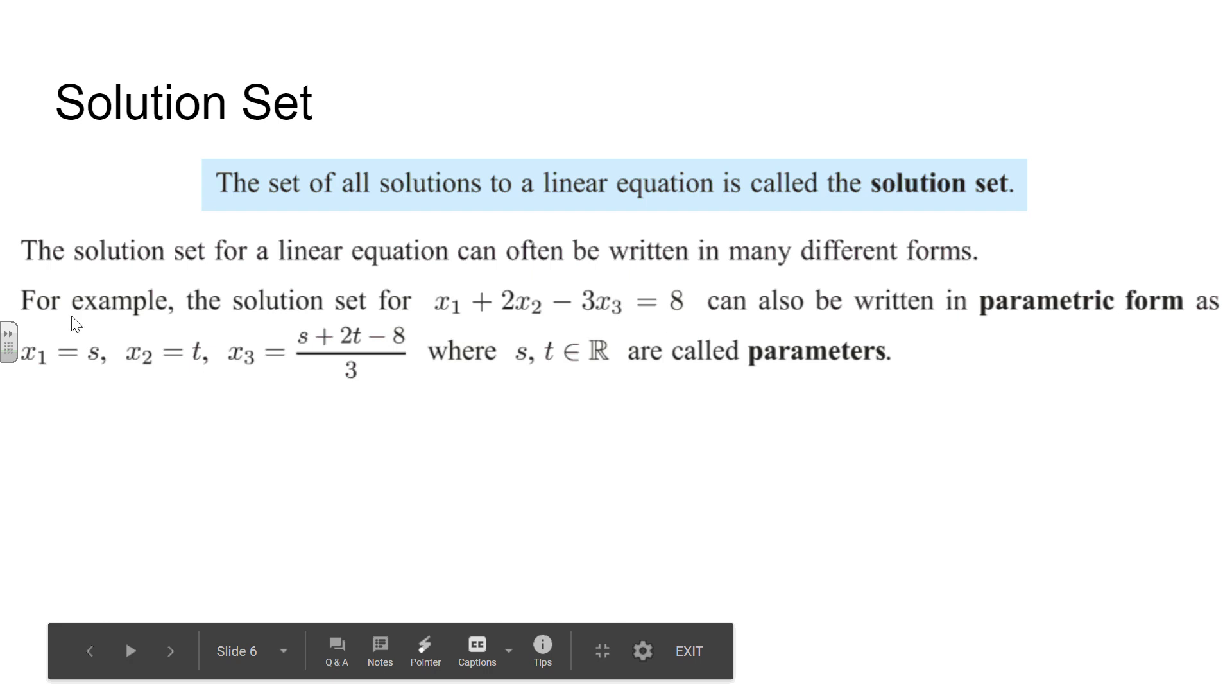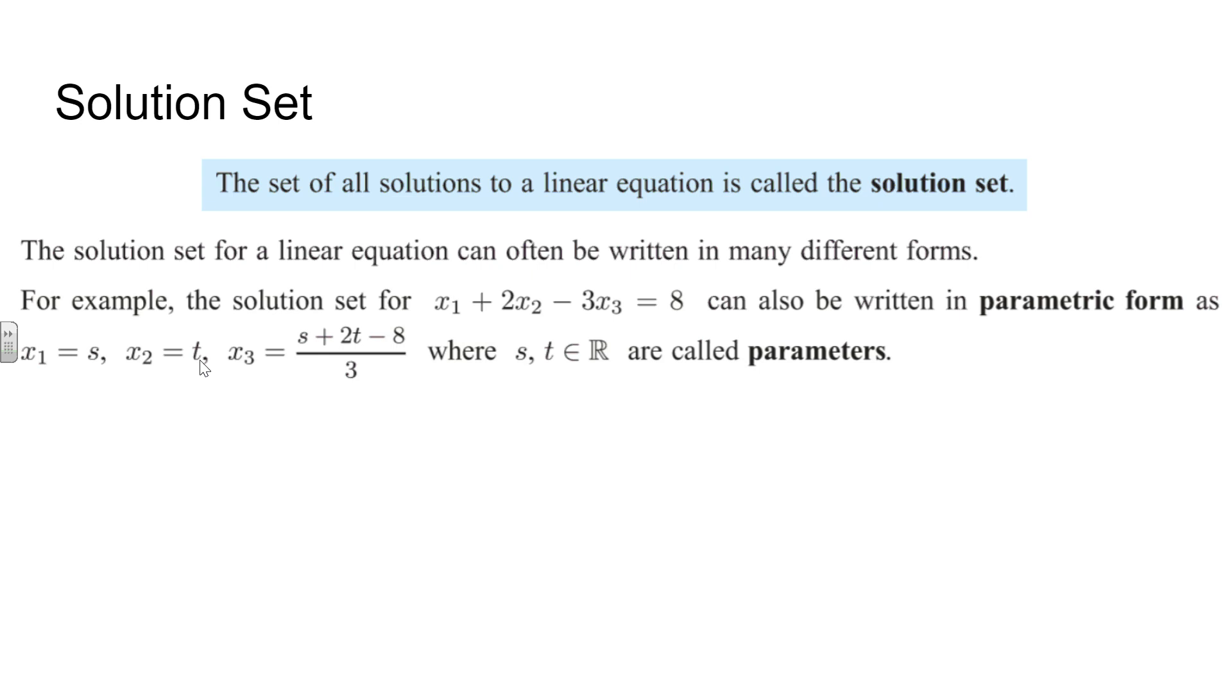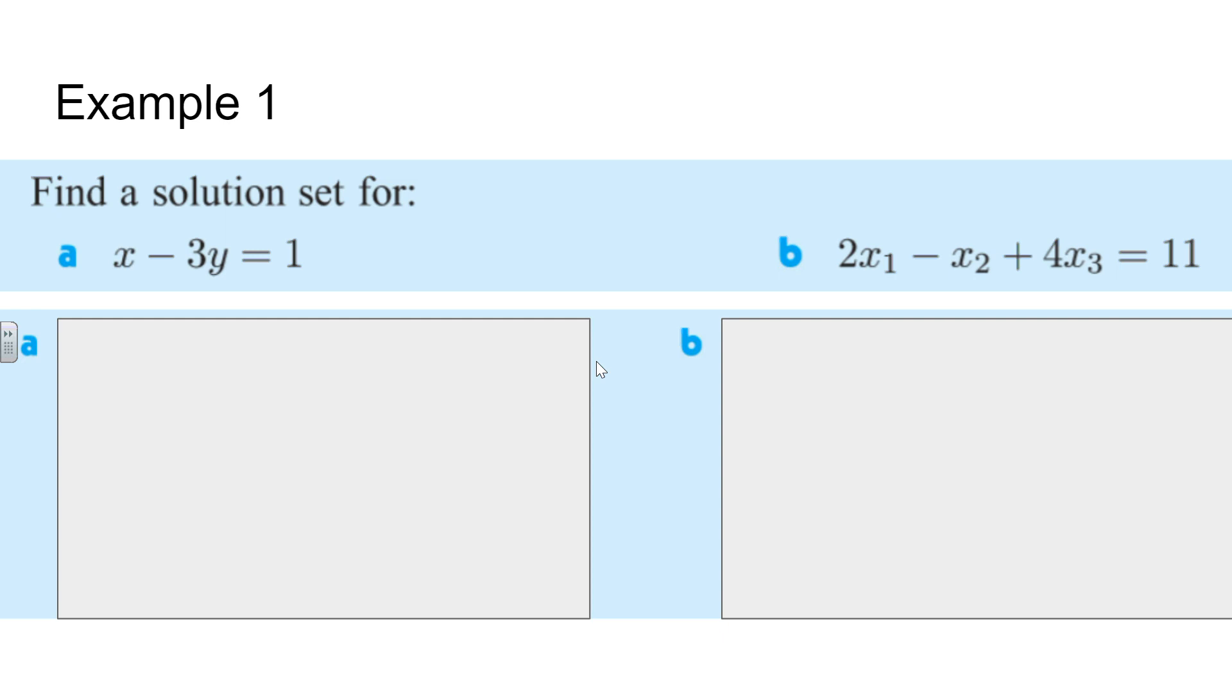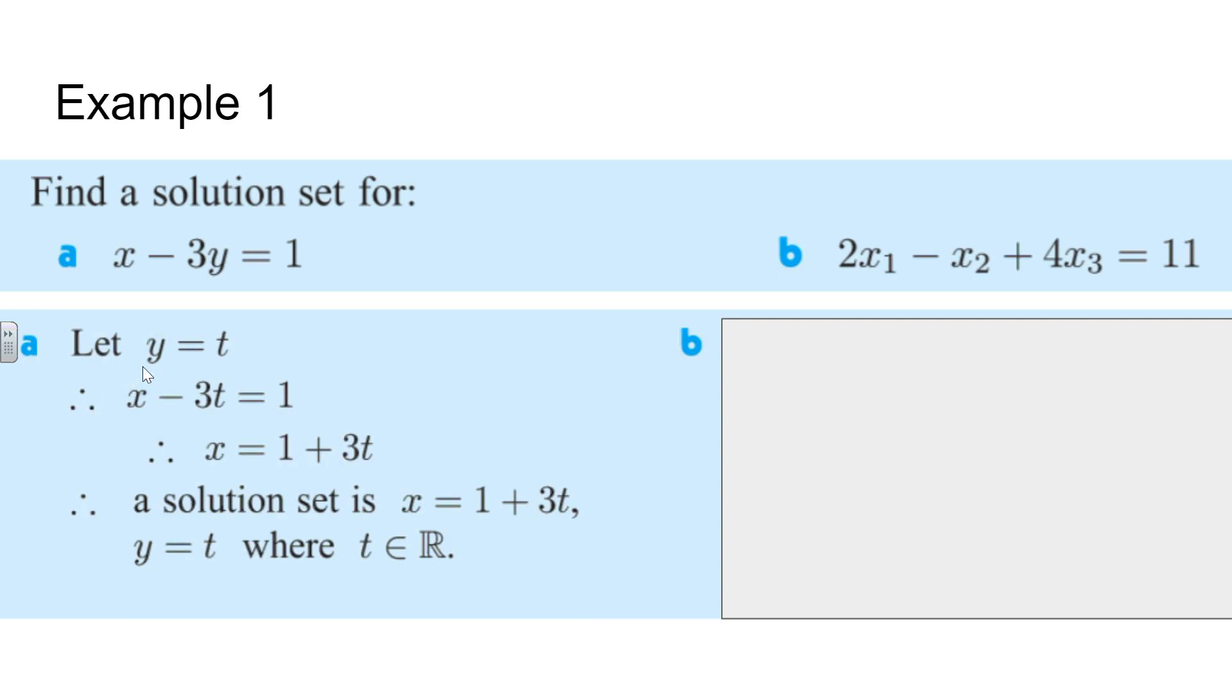Parametric form means that we're going to say x2 be s, or in this case let y be t, and then x3 we're just going to solve for by plugging in s for x1 and t for x2, then solving for x3. We have to state here that s and t are elements of the real number set. So with that in mind, if we start with this first one here, we have x minus 3y equals 1. We're going to start by deciding which one of these variables, x or y, we're going to set as a parameter. In this particular case, we start off by saying y equals t. Could we say x equals t or x equals s? 100% we could, but saying that y equals t is going to make the problem just slightly easier.